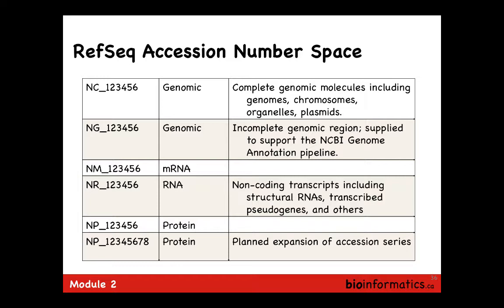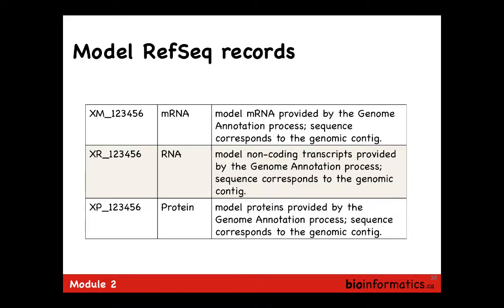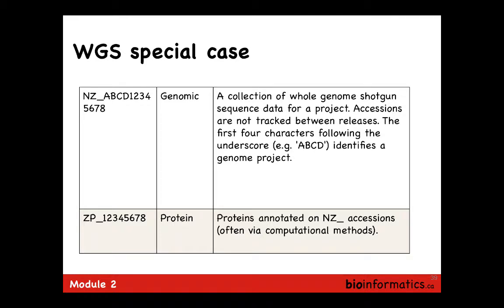RefSeq accessions follow the format N-star-underscore-number. The star indicates the type: NM for mRNA, NP for protein, and so forth — N stands for NCBI. There are many more prefix types added over the years for different types of genomic sequences and assemblies. Some RefSeq entries are computed gene models rather than existing sequences — those were more common at the beginning and are now more rare.